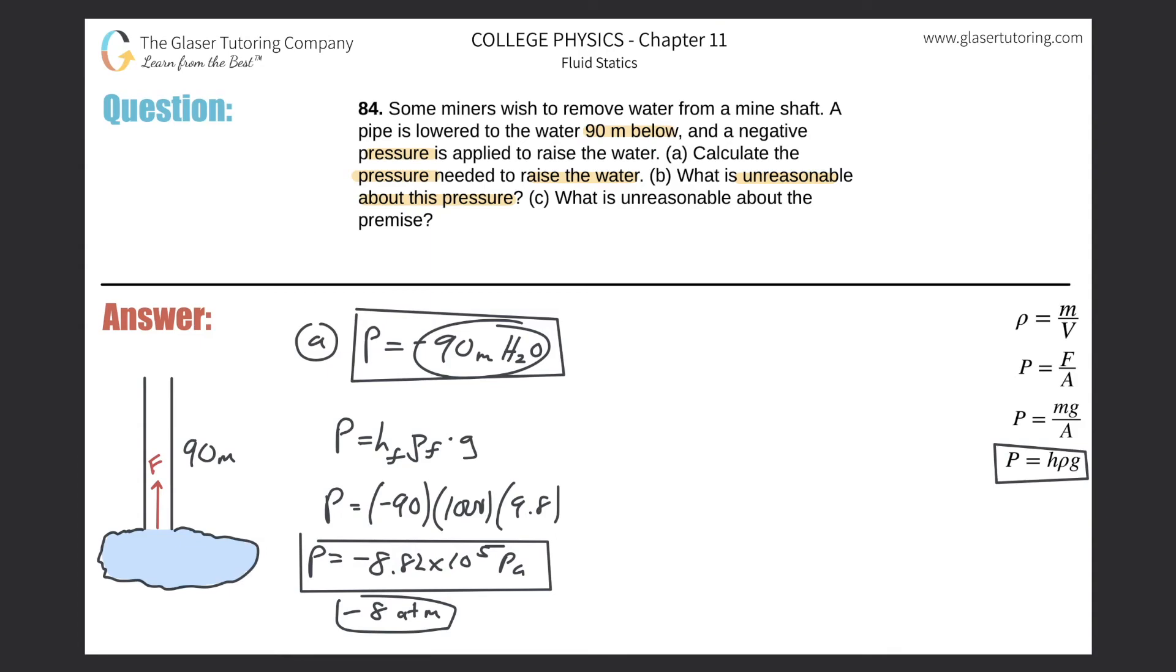There's a certain vapor pressure for water, just like there are for all fluids. And as the pressure above that particular fluid goes down, the likelihood of that fluid vaporizing goes up, meaning turning into a gas.